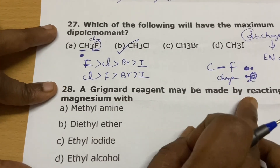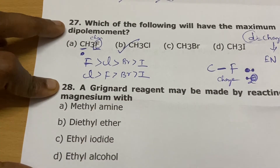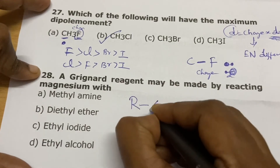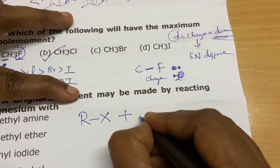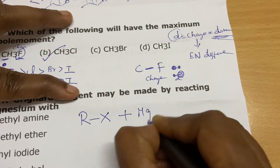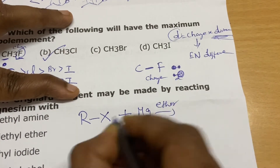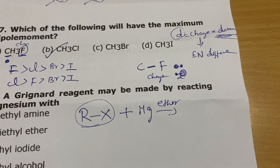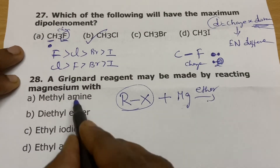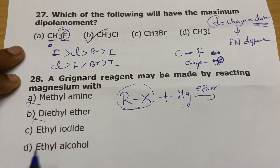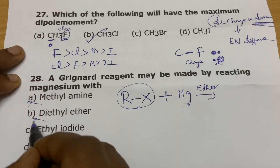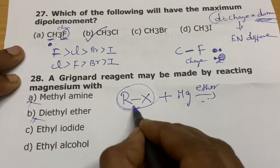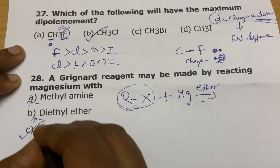Grignard reagent is made by reacting magnesium with an alkyl halide in the presence of ether. You need an alkyl halide, magnesium, and ether — that's all. Ether is just the solvent, not a reagent. The reagent here is ethyl iodide.